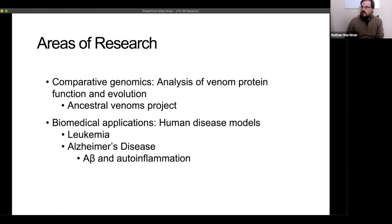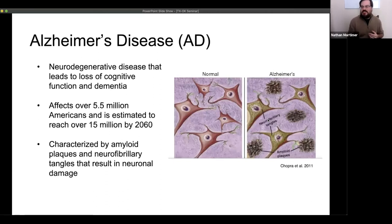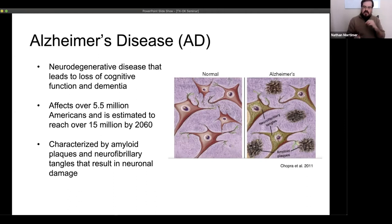The other project is work on Alzheimer's disease — looking at auto-inflammation and Alzheimer's disease. Alzheimer's is one of the major forms of dementia, a neurodegenerative disease leading to loss of cognitive function and eventually dementia, affecting millions of people. At a molecular level, it's characterized by formation of amyloid plaques and neurofibrillary tangles, which seem to happen in that order — the plaques appearing first, and something about their presence allowing the tangles to form. Together, these two things drive the pathogenesis of Alzheimer's disease.